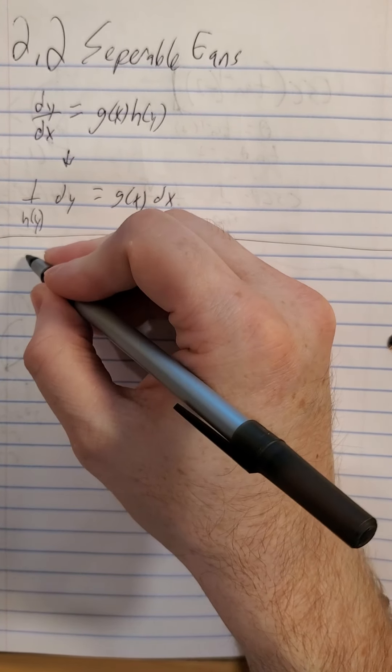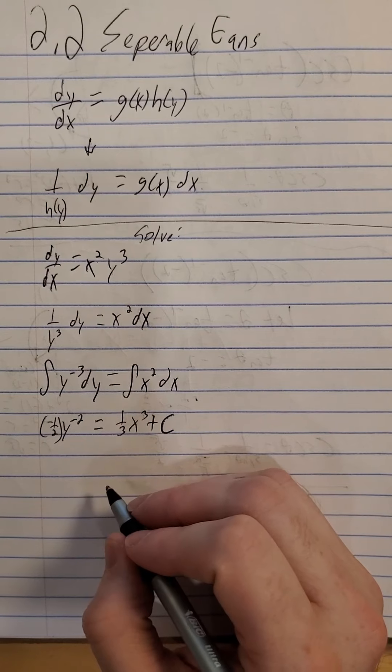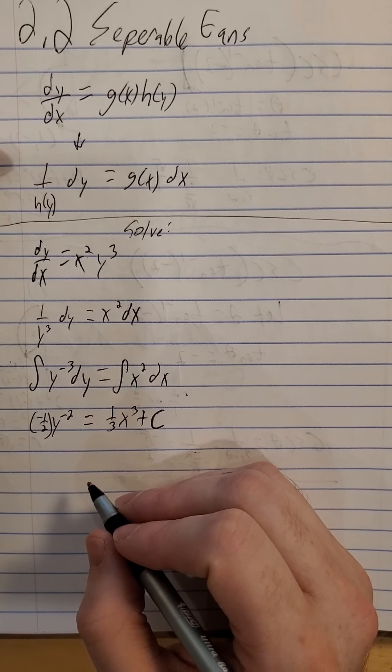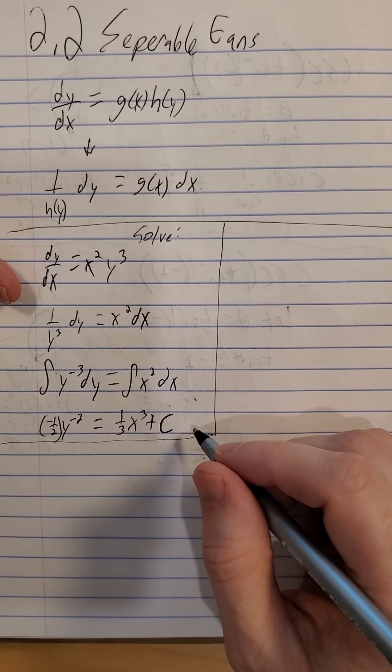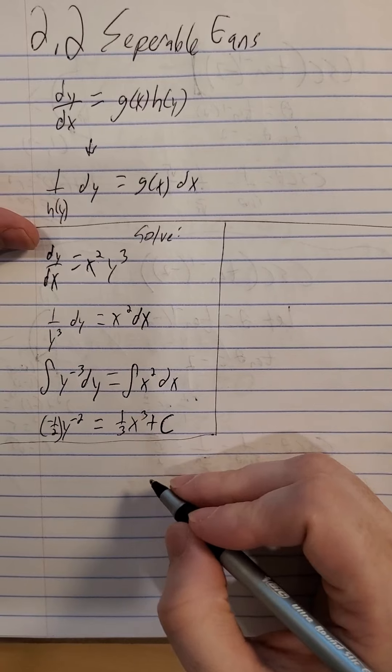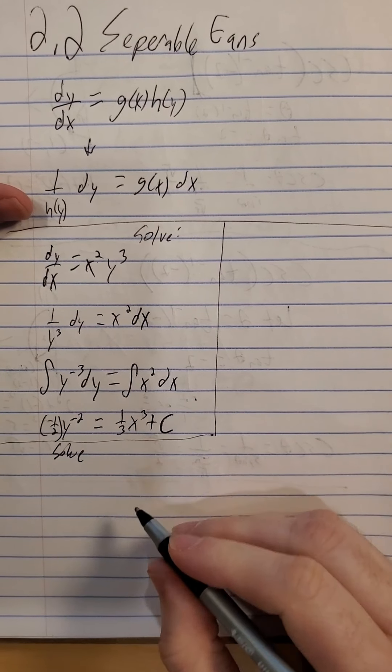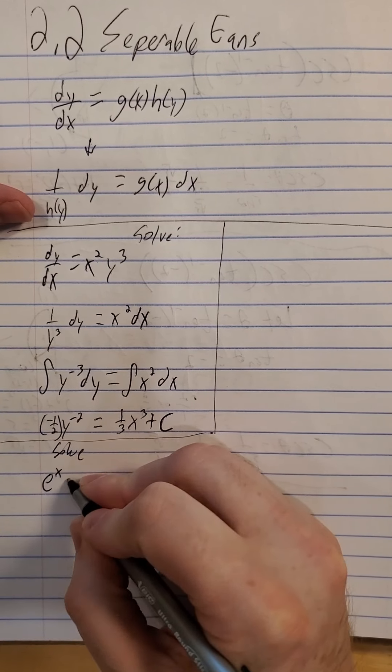We'll integrate both sides. The integral of y to the negative third times dy — the antiderivative of y to the negative third gives y to the negative second, so I need a negative one half out front. That equals one third of x³ plus some arbitrary constant. So we have this implicitly solved: negative one half y squared equals one third x³ plus an arbitrary constant.